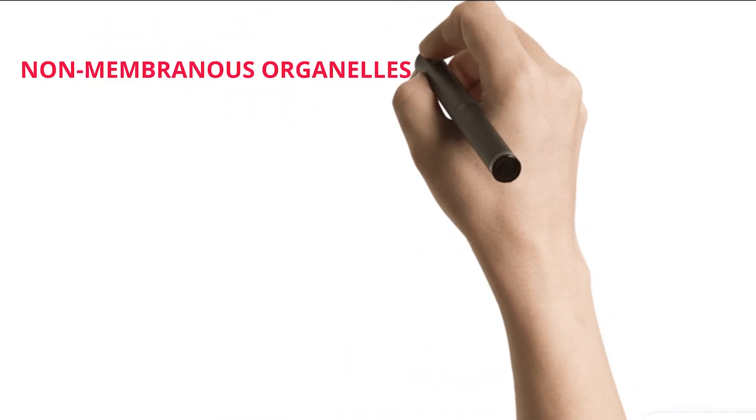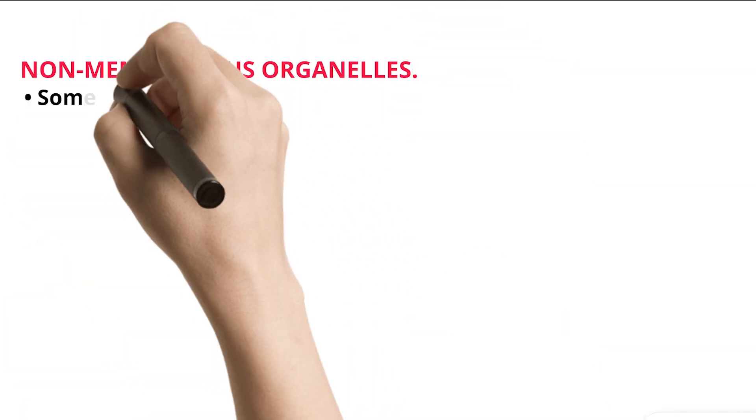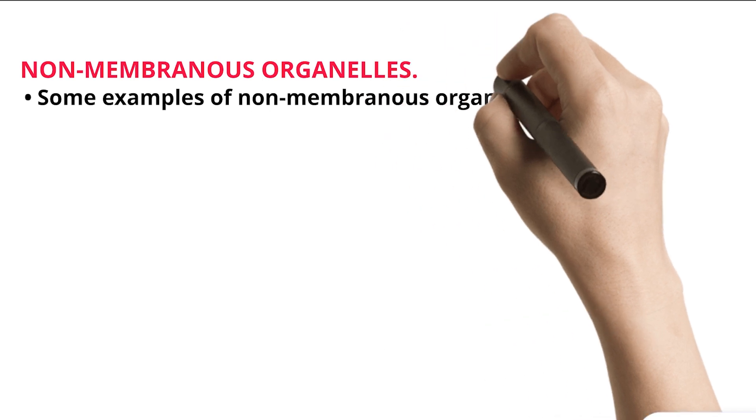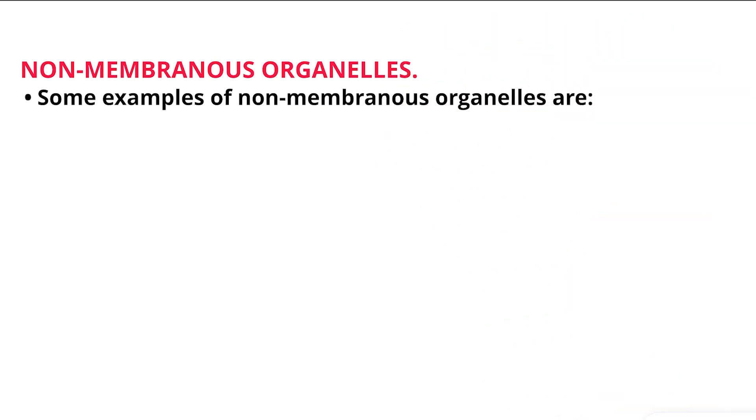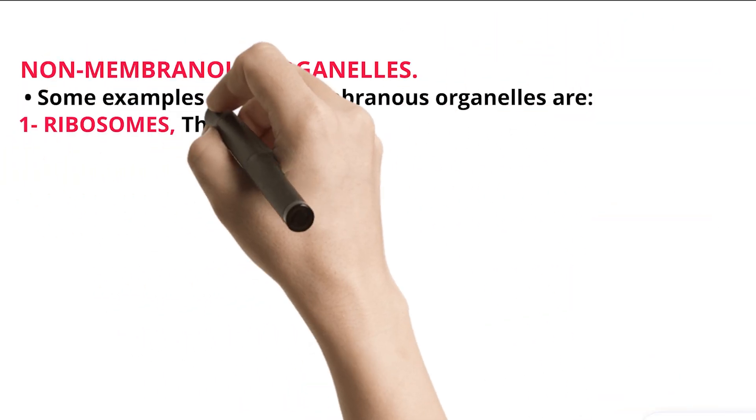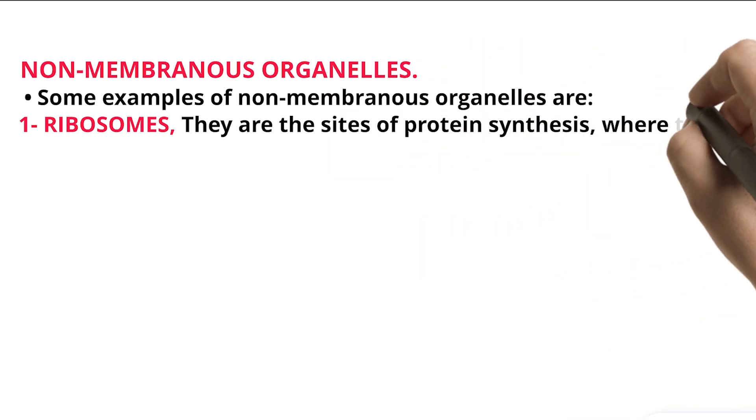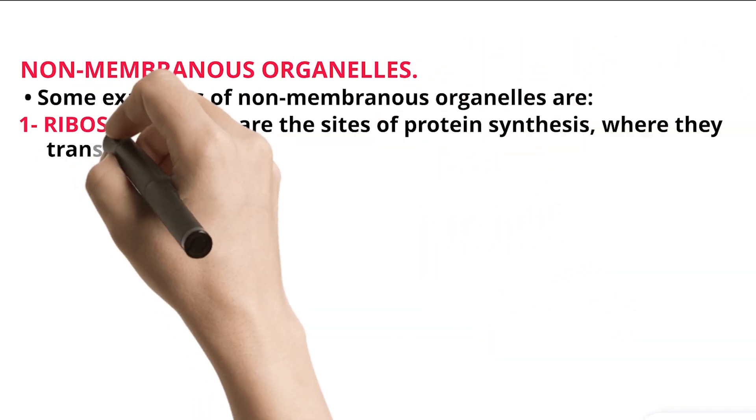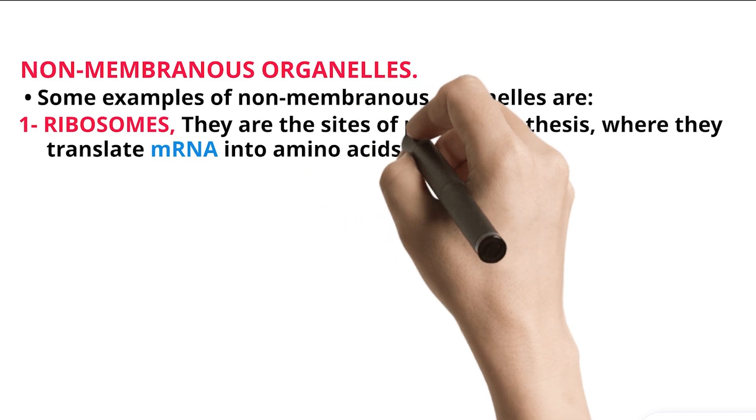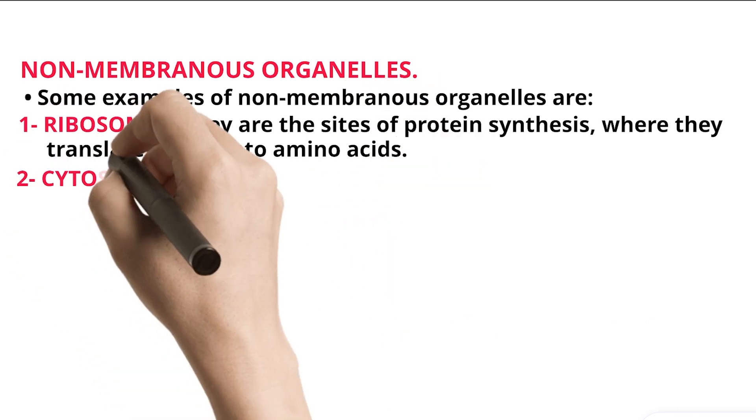Non-membranous organelles. Some examples of non-membranous organelles are: 1. Ribosomes. They are the sites of protein synthesis, where they translate mRNA into amino acids. 2. Cytoskeleton.